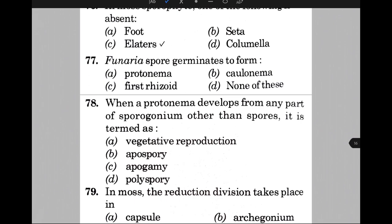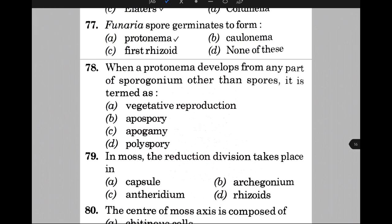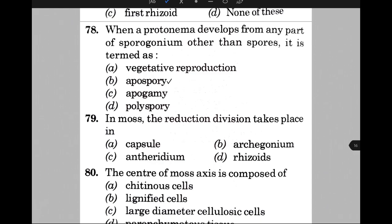When protonema develops from any part of the sporogonium other than spores, it is termed — the answer is apospory. In moss, the reduction division takes place in — the answer is A, that is the capsule. The center of the moss axis is composed of — the answer is parenchymatous tissue.